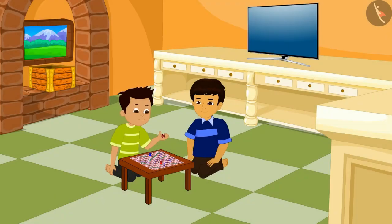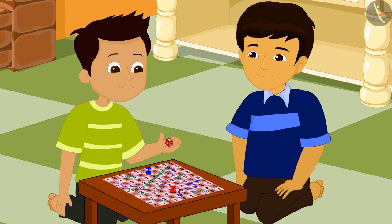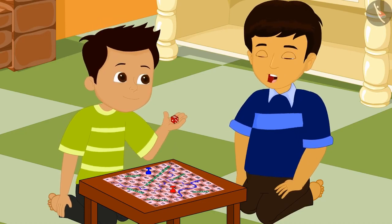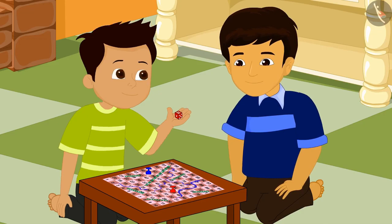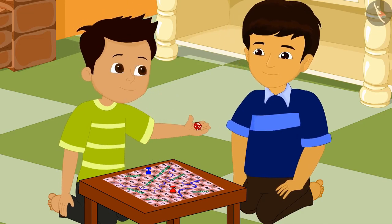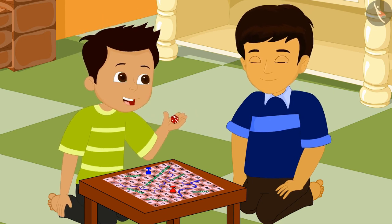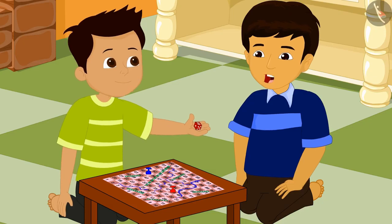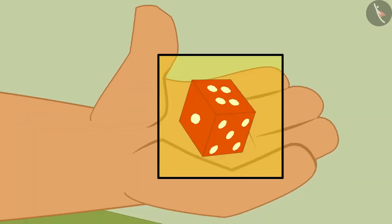Manas and Thomas are playing a game of snakes and ladders. Thomas, it's your turn. Why are you taking so long? Throw the dice quickly. Wait Manas, did you notice that this dice is not cuboid in shape? Yes Thomas, all the faces of this dice are square. So the shape of this dice is that of a cube.